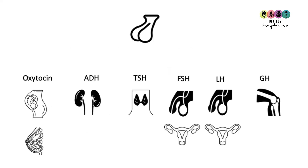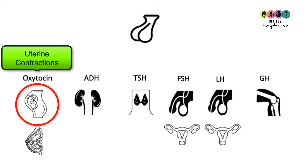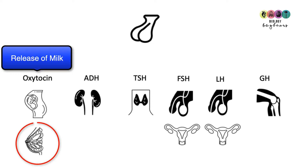Let's go through some important hormones associated with the pituitary gland. The first is oxytocin, which you'll meet in human reproduction. Oxytocin is produced and secreted by the pituitary gland. It travels in the blood to the walls of the uterus — the uterine walls — where it causes and intensifies uterine contractions. Oxytocin is also produced when a baby suckles on the breast, stimulating the pituitary gland to release it, playing a role in milk letdown.